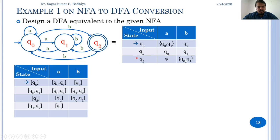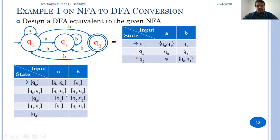For [q1, q2] on 'a': q1 on 'a' goes to q0 and q2 on 'a' goes to phi, so the union gives {q0} = [q0], forming the next state [q0, q1]. On 'b': the next state formed is [q0, q1]. Checking all states obtained in the next state column: [q0, q1] is already added, [q0] is already added, so the only remaining state to add is qd.